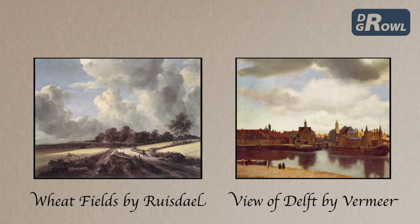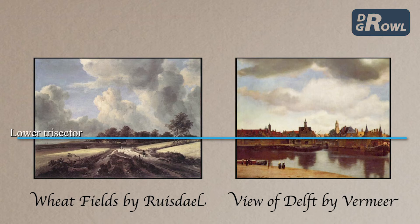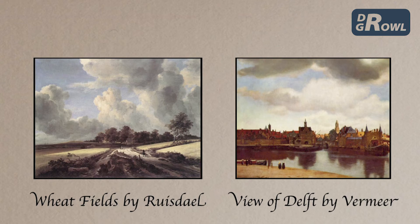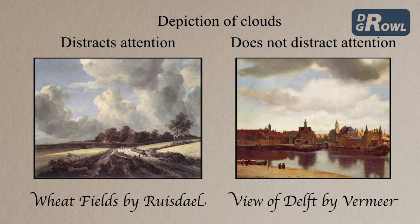Though the line of the horizon can be placed arbitrarily, landscape painters prefer to choose the lower trisector. This is an advantageous choice, as instead of a simple symmetry, the result is a more harmonious symmetry. The three-dimensional effect and stabilization are augmented. The drawback is that a dynamic depiction of clouds in the space opened in the upper two-thirds can easily distract attention from the central theme.